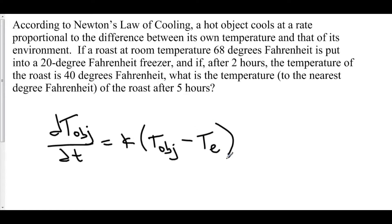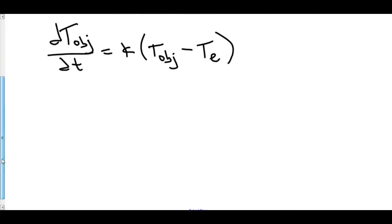The temperature of the environment is going to be constant in this particular case, and T-object is our function value. When we solve a differential equation, the first order of business is to separate our variables. So let's divide by T-object minus T-environment, and multiply both sides by dt.